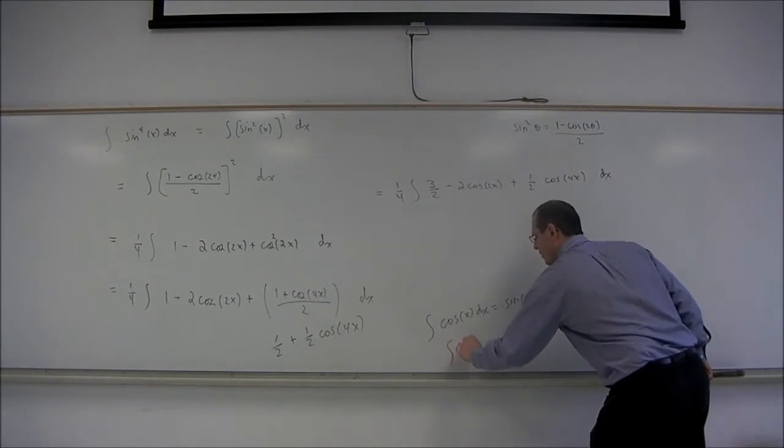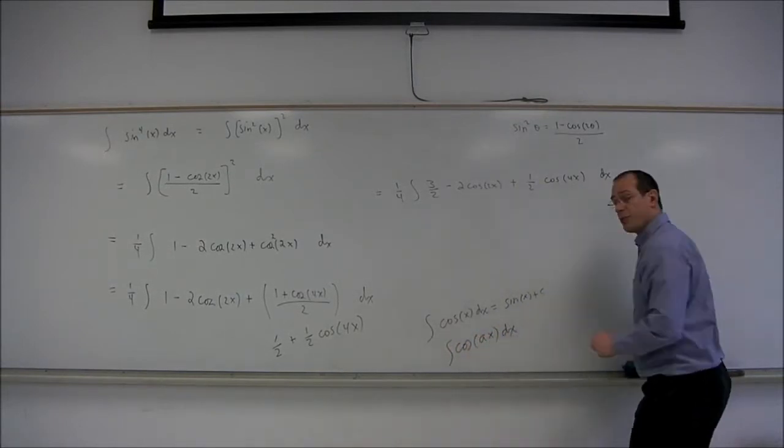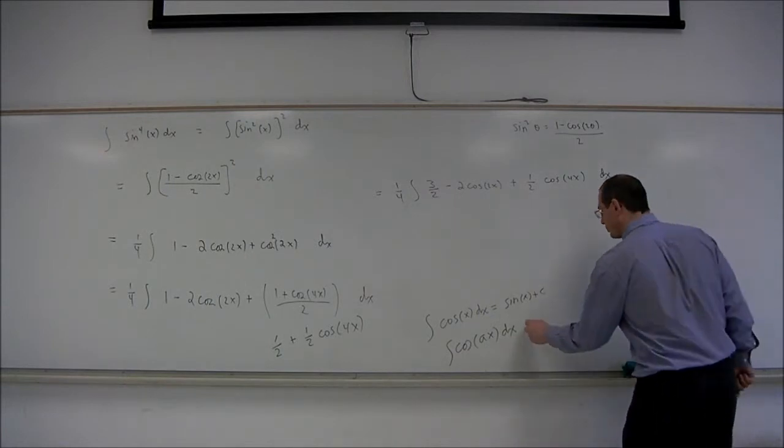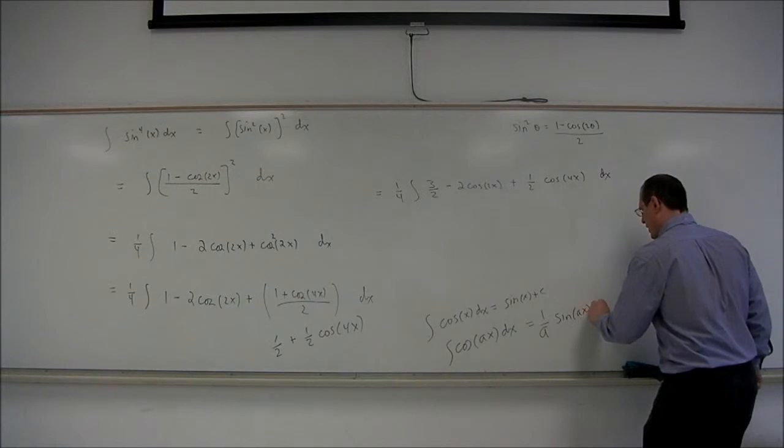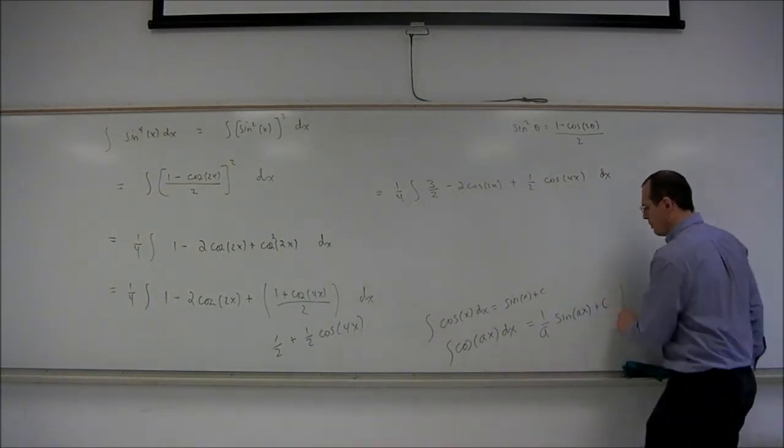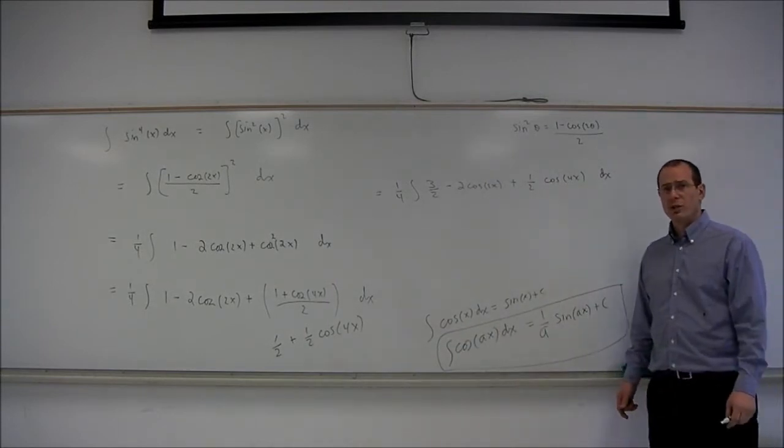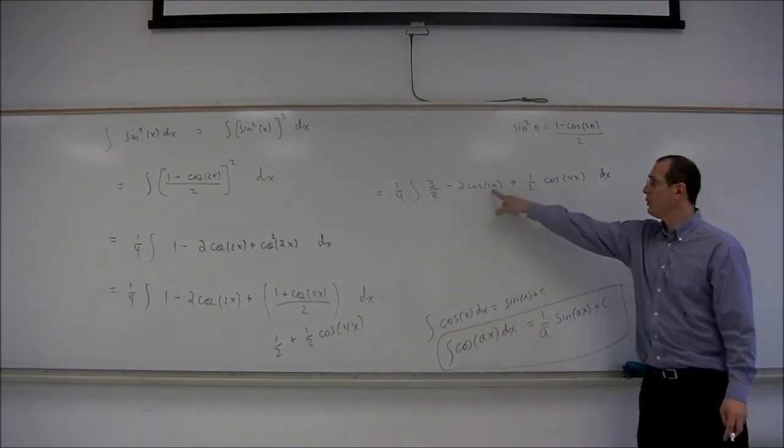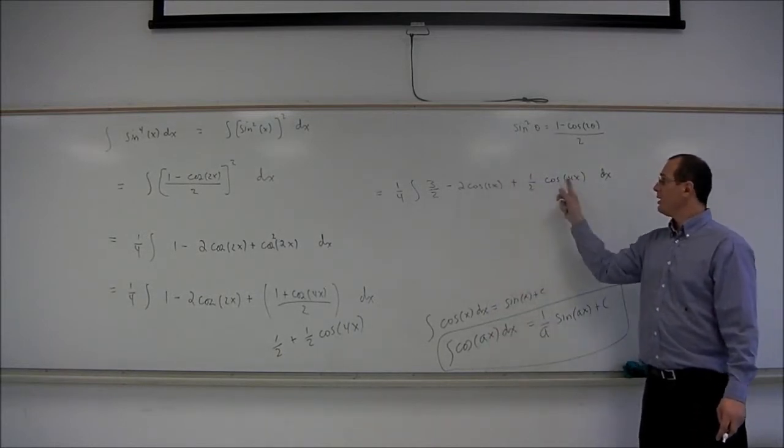And a minor modification of this is the integral of cosine of ax will be 1 over a times the sine of ax. You could do a u substitution, but it's probably better if we can handle this modification without resorting to a substitution. We're going to have to do it twice for two different values of a in this problem.